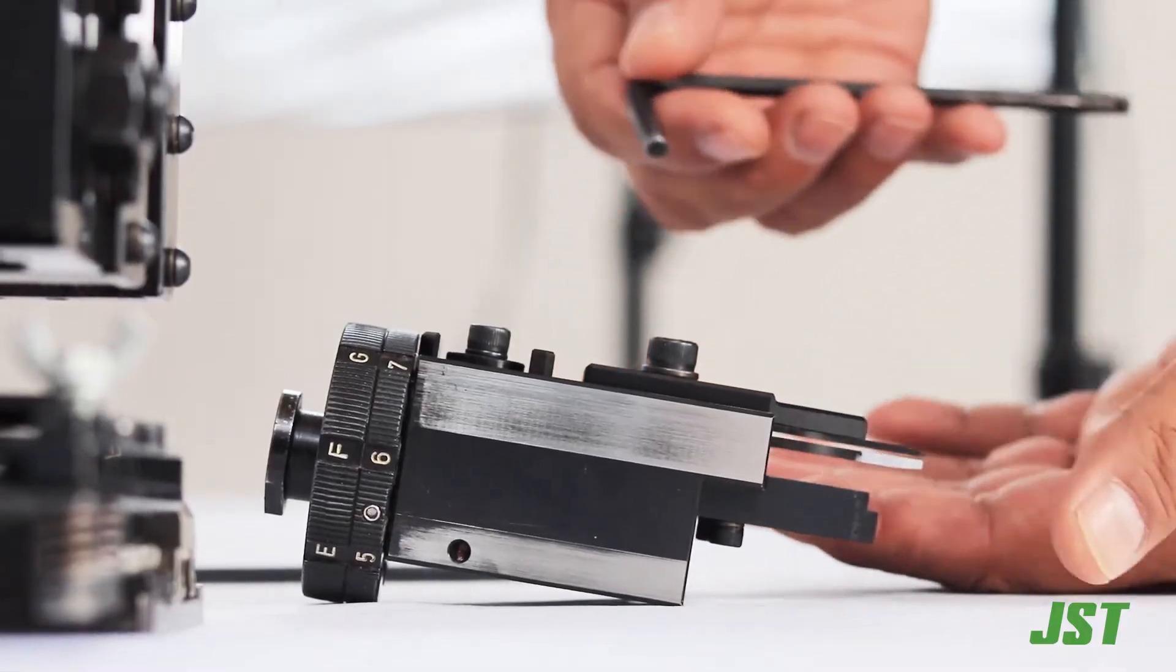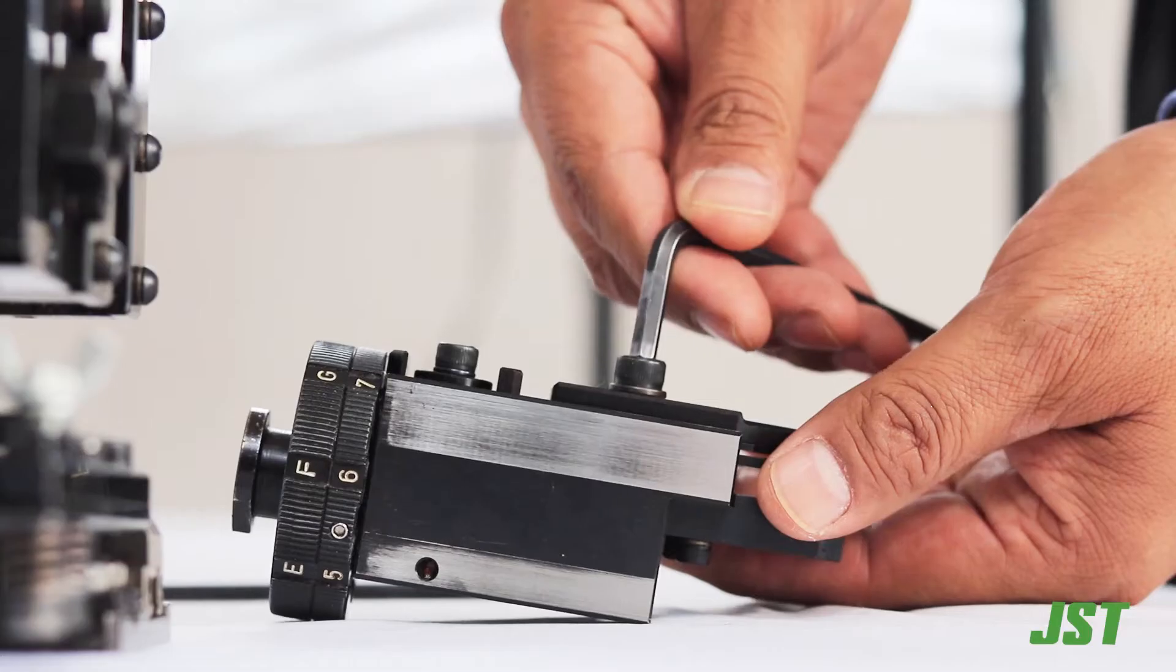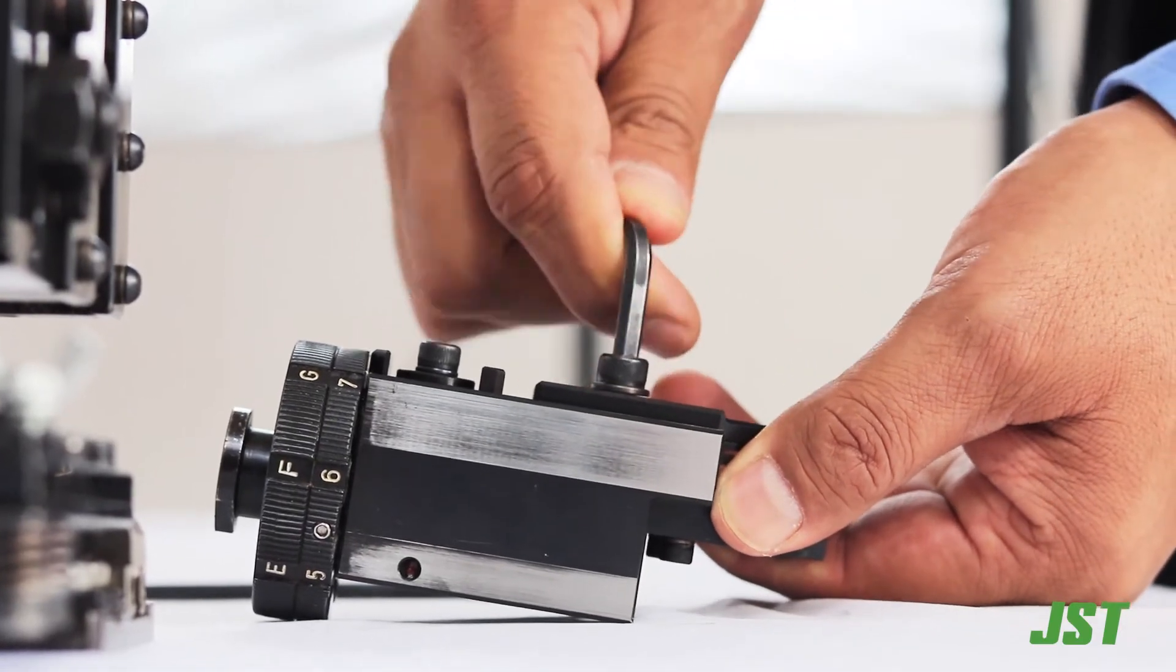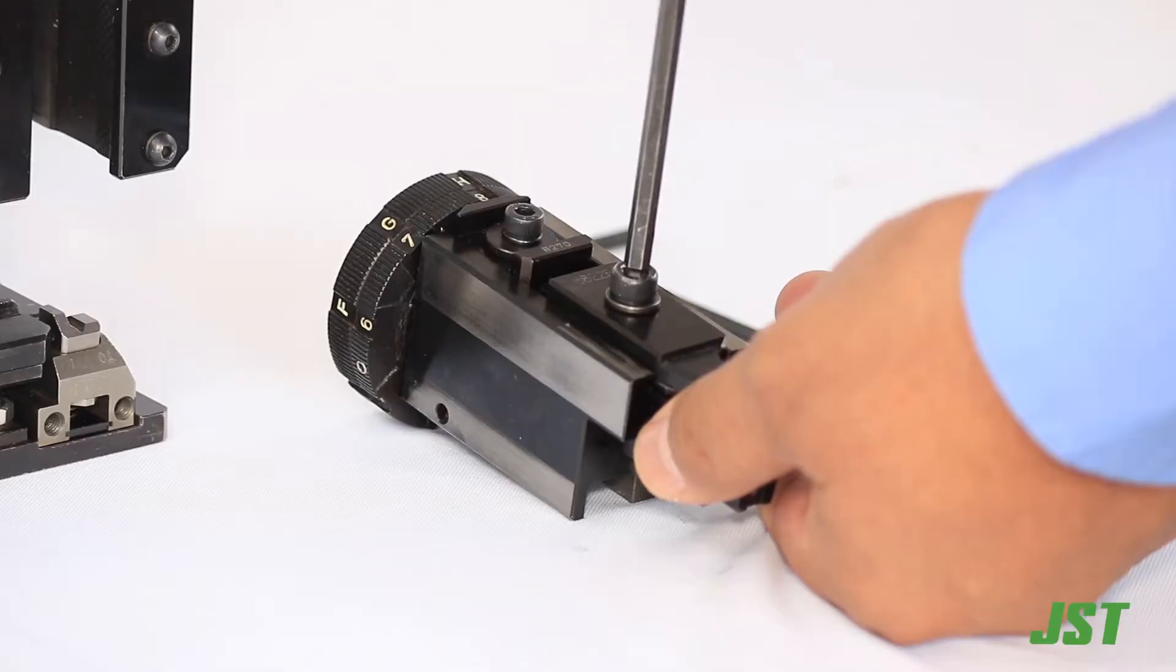For the replacement of one or both crimpers, we must remove the screw that holds them by using the 5 mm Allen wrench key.